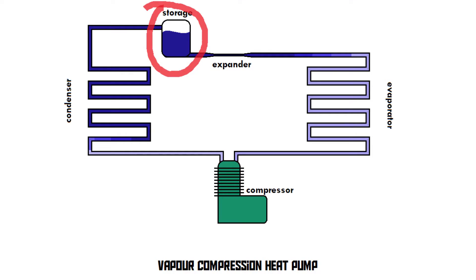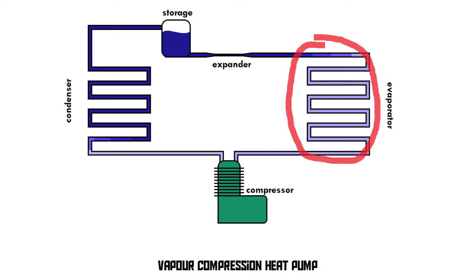Let's walk through the entire system starting inside the storage tank. The refrigerant there is in liquid form at around room temperature, about 20°C. The liquid refrigerant first goes through the expander and then enters the evaporator. Inside the evaporator, the pressure is very low, which means the boiling point of the refrigerant is much lower than before, so the relatively warm liquid refrigerant immediately boils and starts to evaporate.